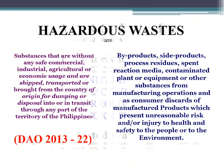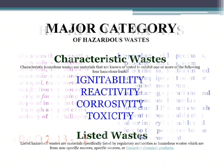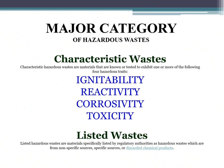The major categories of hazardous waste. Characteristic waste: characteristic hazardous waste are materials that are noted or tested to exhibit one or more of the following hazardous traits — ignitability, reactivity, corrosivity, and toxicity.